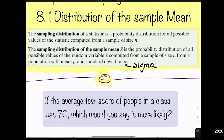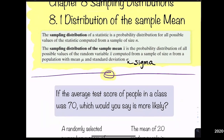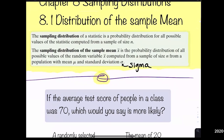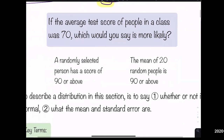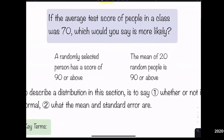A sampling distribution is sort of like a normal curve — think of a normal curve representing how spread out the data is, how bunched up it is in the middle, and how far it goes out in the tails. That's what a distribution is.